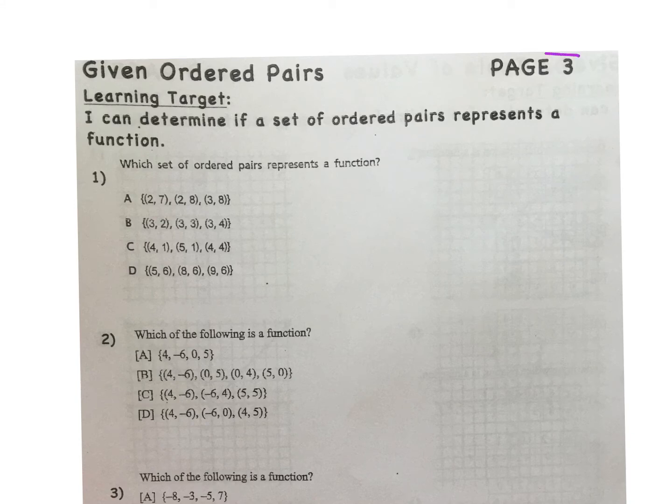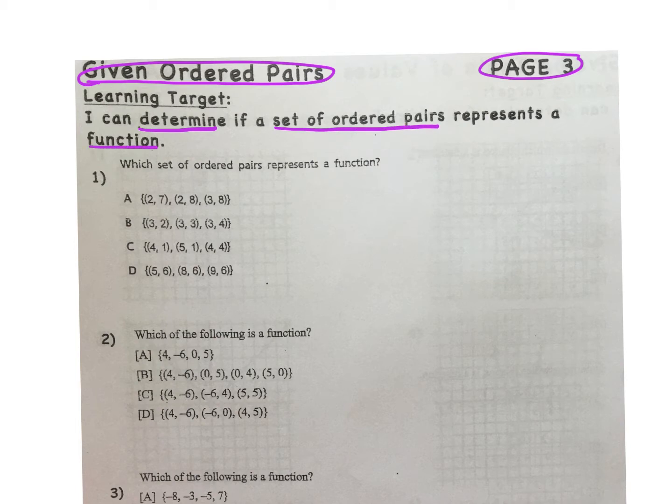Welcome to page 3 of Excel packet number 6. In this packet, we're going to focus on functions. When is a relation a function? On this page, we've been given some ordered pairs, and it's our job to determine which of these ordered pairs creates a function. Our I can statement reads, I can determine if a set of ordered pairs represents a function.